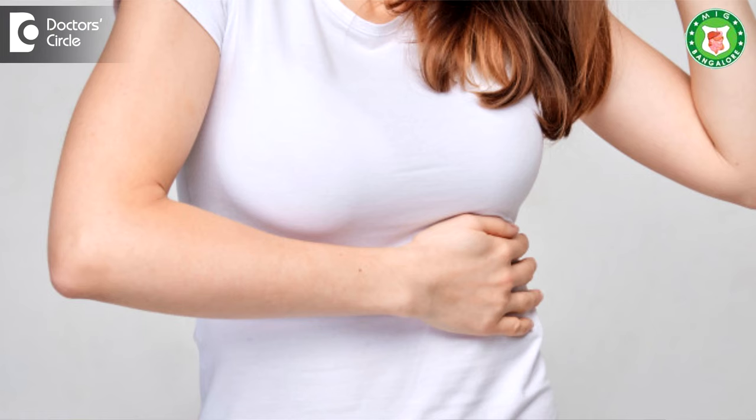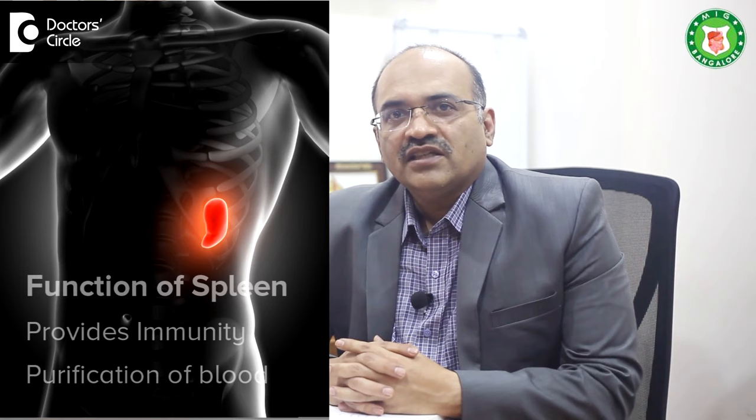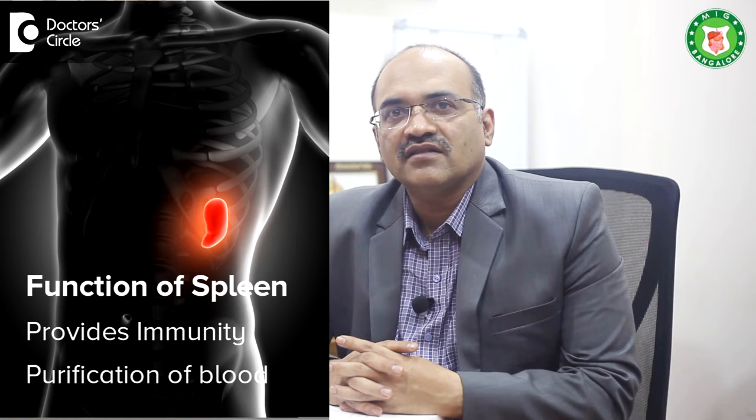Spleen is an organ which is situated on the left upper part of our abdomen, just beneath our left rib cage. The main function of Spleen is: one, it is an organ for our immunity. Second, it is an organ where our blood gets purified. These are the major functions of Spleen.